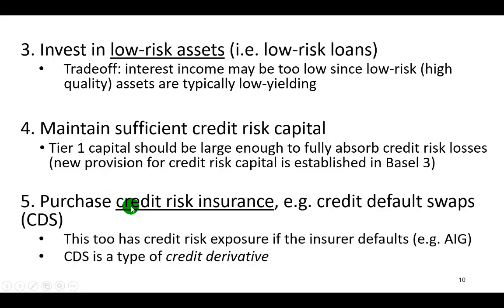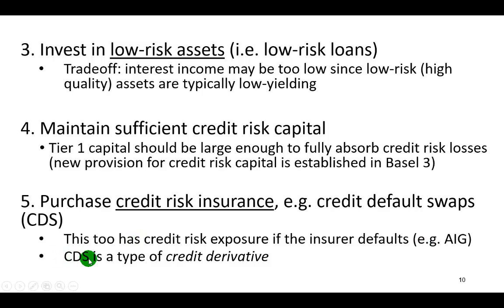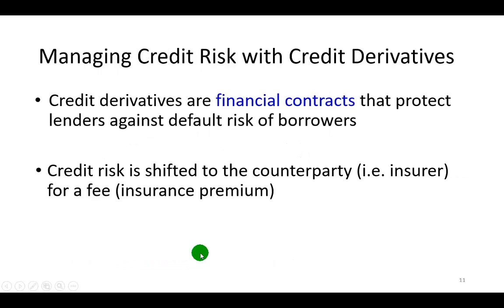Banks could also consider credit risk insurance such as credit default swaps, although as observed during the 2008 global financial crisis, that too has risk exposure. If the insurer defaults — as was the case with AIG — then there is a big problem. A credit default swap is one of several types of credit derivatives designed to protect lenders in the event of borrower defaults. What it does, in essence, is shift credit risk to the counterparty — meaning to the insurer — for a fee, as in every insurance transaction.